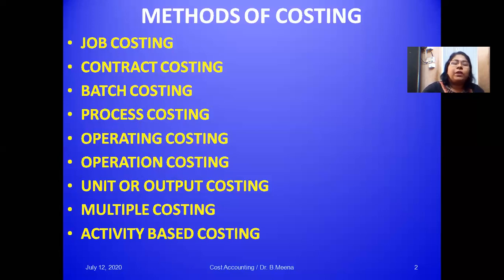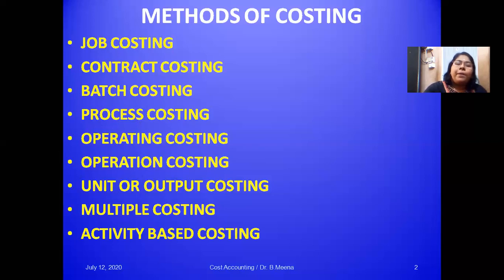Next is operating costing. This method is applicable only to service industries where no product is produced but some service is rendered. Examples include transportation, lodging houses, cinema theaters, and hospitals. These are the best examples to explain operating costing.